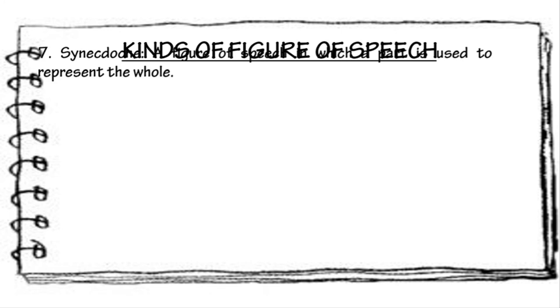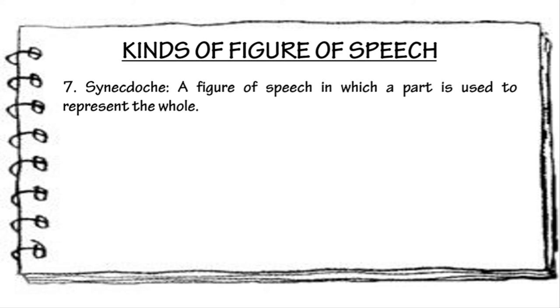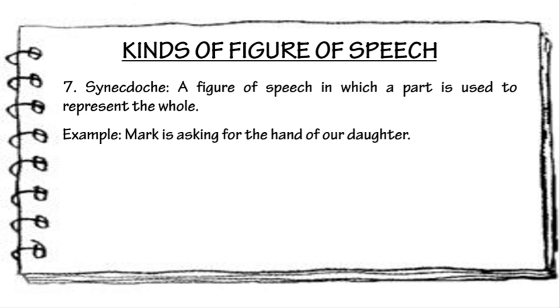Synecdoche is a figure of speech in which a part is used to represent the whole, or vice versa. Example: Mark is asking for the hand of our daughter. We use the word 'hand' to represent the word marriage as a whole.